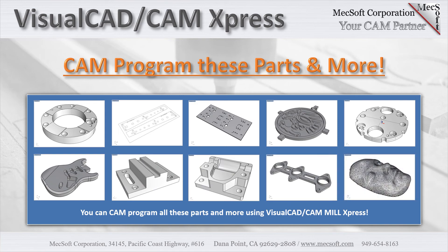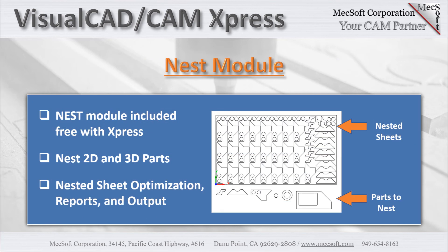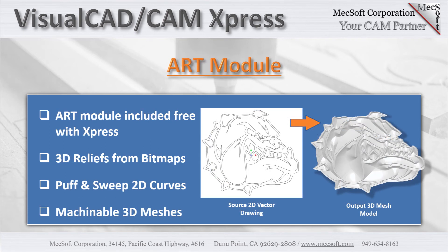Visual CAD CAM Express also includes two additional modules, Nest and Art, completely free of charge. The Nest module allows you to nest 2D or 3D part geometry onto rectangular or irregular sheets for machining, with nested sheet optimization and nesting reports. The Art module offers artistic modeling functions such as raster to vector conversions, converting bitmap files to 3D mesh reliefs, and puffing and sweeping 2D curves into 3D meshes.